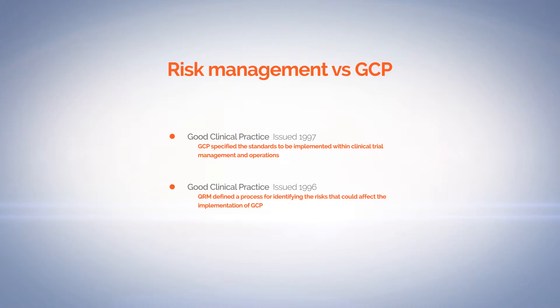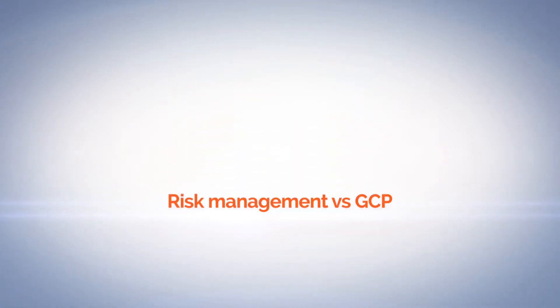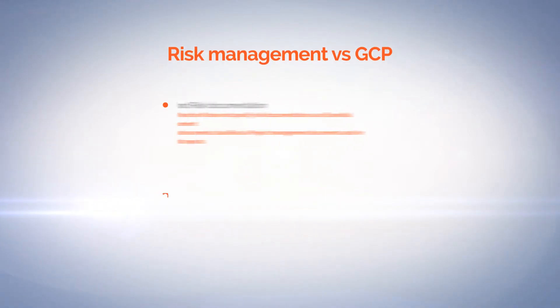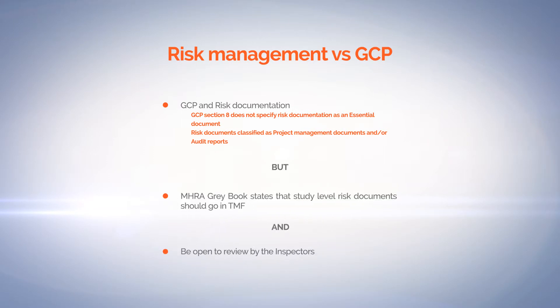Quality risk management, the newer guidance, defines a process for identifying the risks that could affect the implementation of GCP. Risk management is not instead of GCP, but risk management will make sure that when you're trying to achieve GCP, you actually target your activities in the right area. So GCP and risk documentation work together.